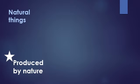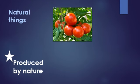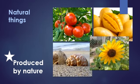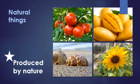Now there is a difference between non-living things and natural things. Natural things are things that are produced by nature. You all like fruits, vegetables, and flowers — these are all natural things in our environment. Environment means anything that is surrounding us. The examples you can see — tomatoes, mangoes, seashells, flowers, sunflowers — are all produced by nature and are called natural things.